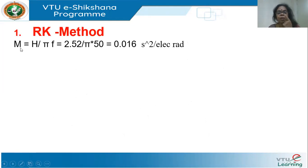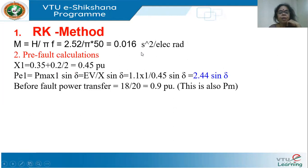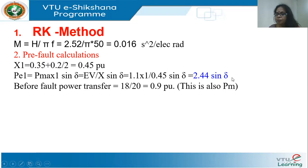M is H by π·f, which gives 0.016 seconds per electrical radian. Pre-fault, I have two lines of 0.2 per unit reactance in parallel, and the generator reactance is 0.35. So x1 is 0.45 and Pe1 = 2.44 sin δ. P_max before the fault is 2.44. The power transfer is 18 MW, i.e., 0.9 per unit, which is also equal to the mechanical power.